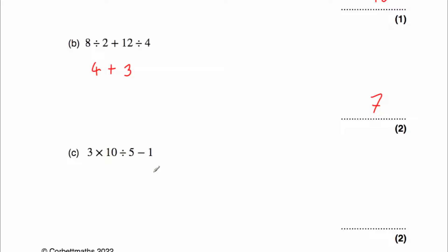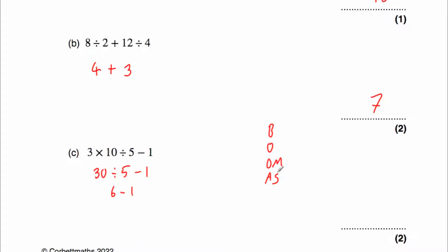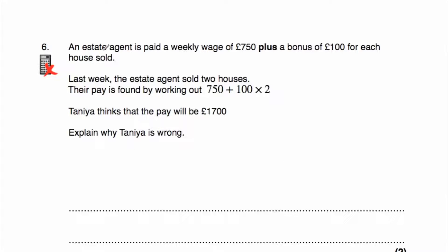Question c: work out 3 multiplied by 10 divided by 5 take away 1. No brackets, no orders, but we do have divisions and multiplications — these have the same priority, so we work left to right. First 3 times 10 is 30. Then 30 divided by 5 is 6. Finally, 6 take away 1 is 5.